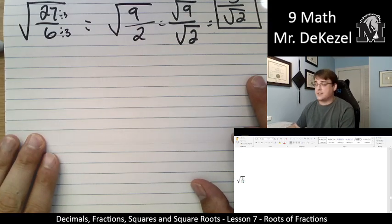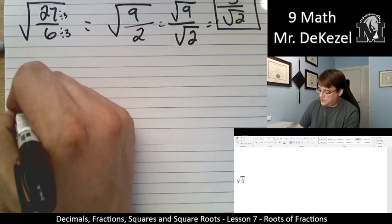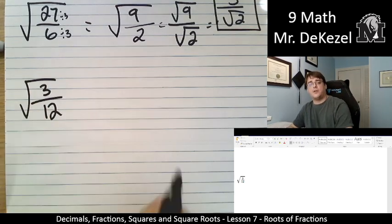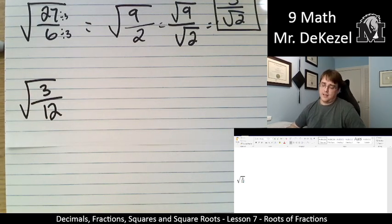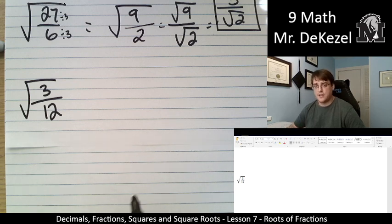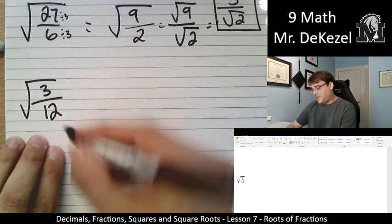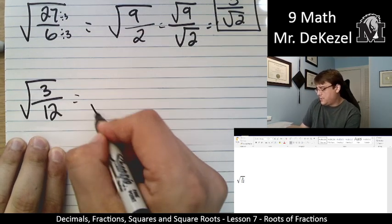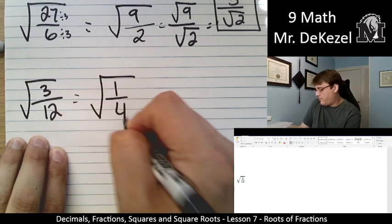One last question. So, this one is the root of 3 over 12. I'm looking at this one again. It does not seem like I can square root any of these. I don't know what the square root of 3 is, and I don't know what the square root of 12 is. So, I'm going to go ahead and reduce this. This is the same. 3 twelfths is the same as 1 quarter. So, this would be the root of 1 over 4.